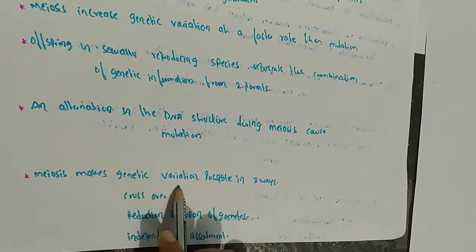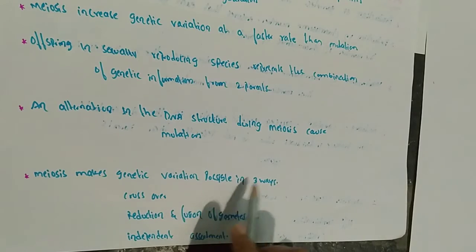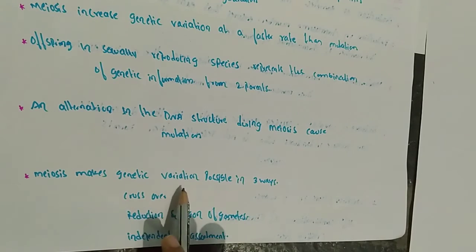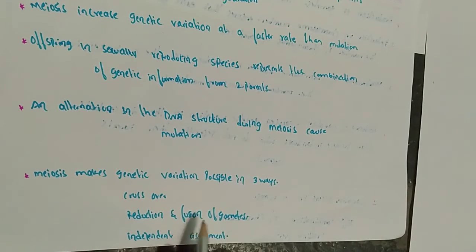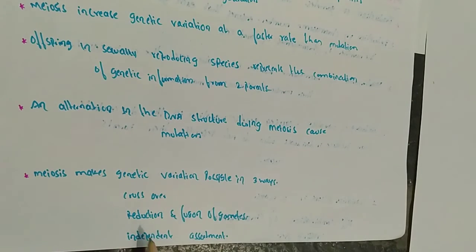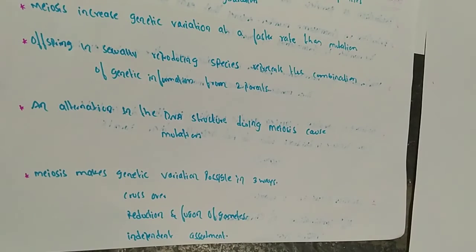Meiosis makes genetic variation possible in three ways: crossover, reduction and fusion of gametes, and independent assortment. Independent assortment describes how different genes independently separate from one another when reproductive cells develop.